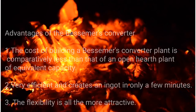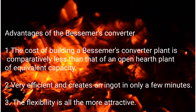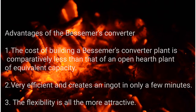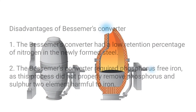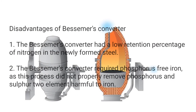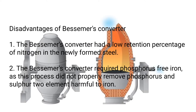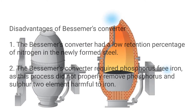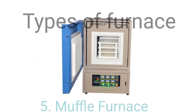Melting of metal is typically accomplished with coal and coke fires. Advantages of Bessemer's converter: 1. The cost of building a Bessemer's converter plant is comparatively less than that of an open hearth plant of equivalent capacity. 2. Very efficient and creates an ingot in only a few minutes. 3. Greater flexibility. Disadvantages: 1. Low retention percentage of nitrogen in the newly formed steel. 2. Required phosphorus-free iron, as this process did not properly remove phosphorus and sulfur — two elements harmful to iron.